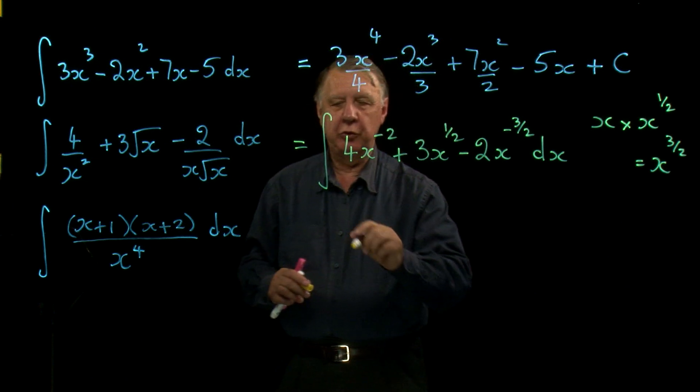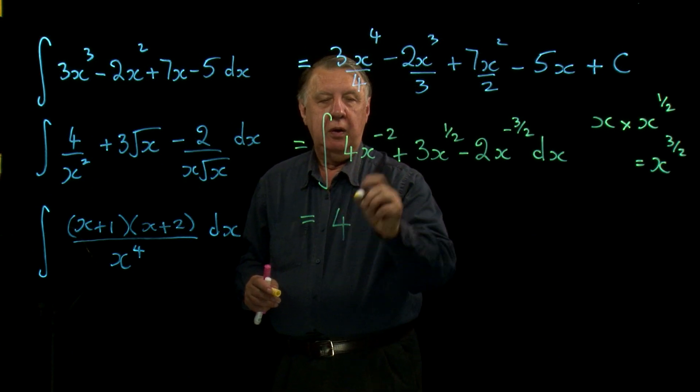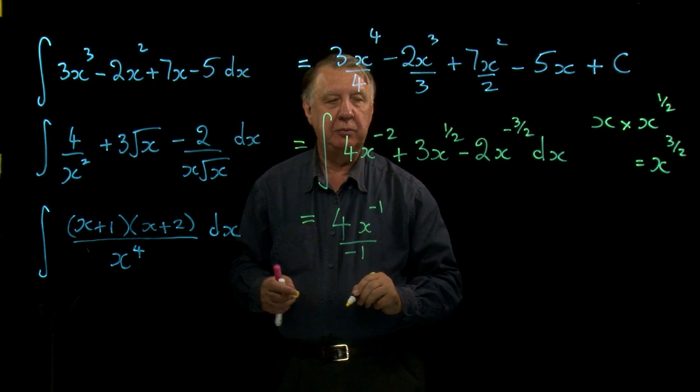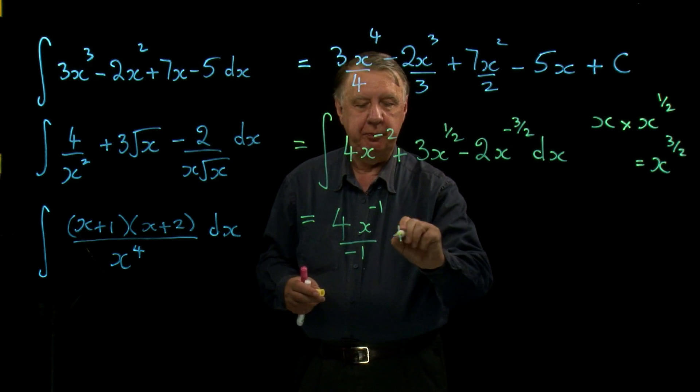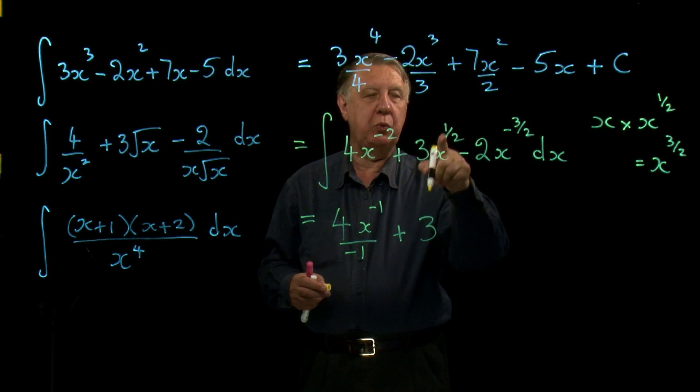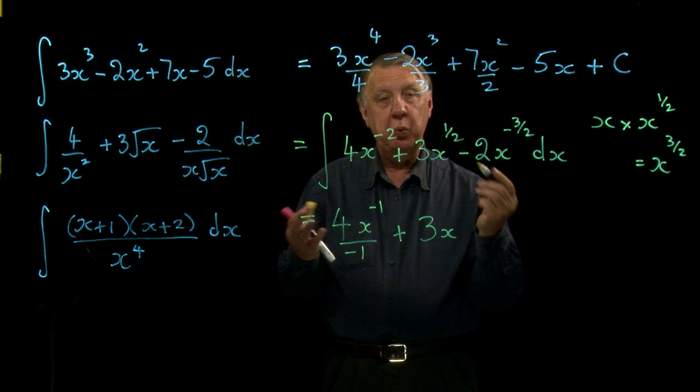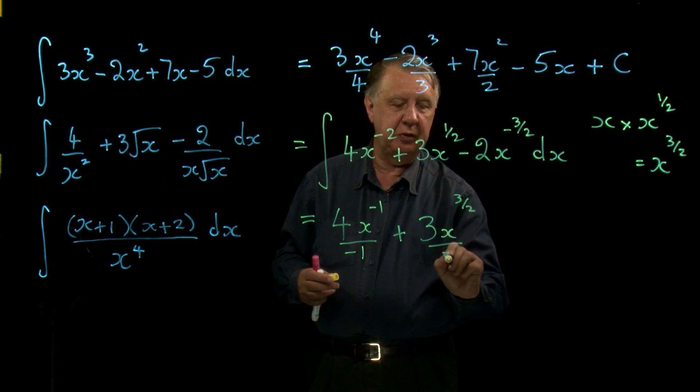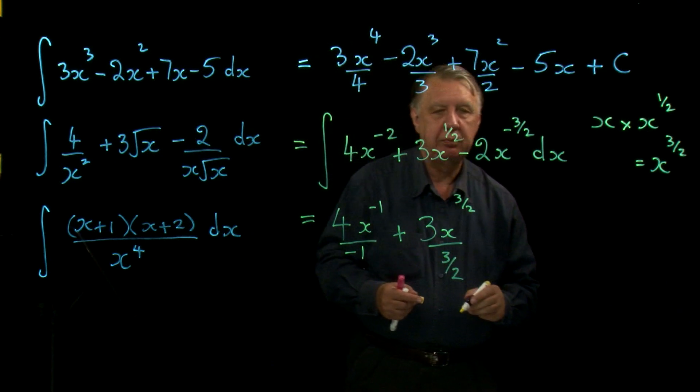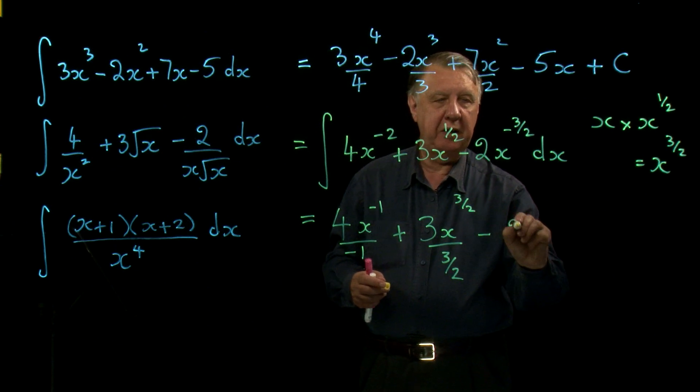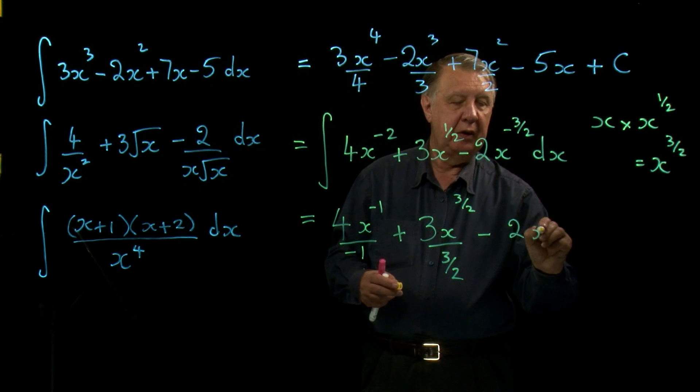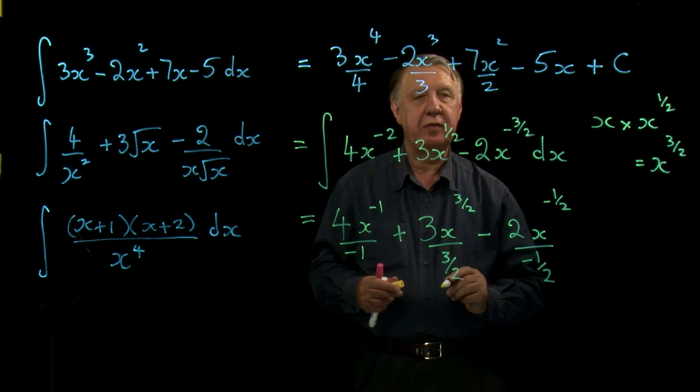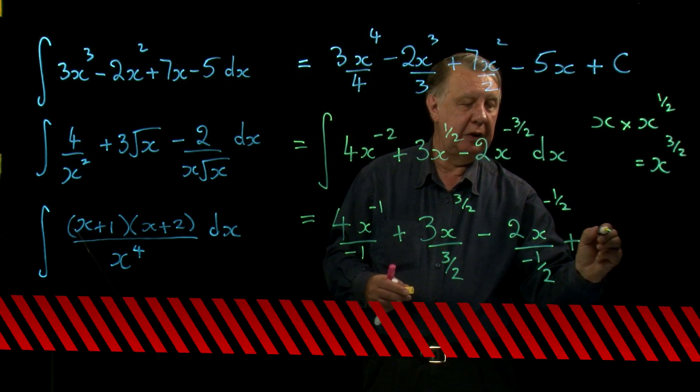X to the minus 2. Add 1 to the power is minus 1. Divide by the new power. Plus x to the half. Add 1 to the power. Now that's 1 and a half. But we don't like mixed fractions. So it's 3 over 2 divided by 3 over 2. Minus twice. Add 1 to negative 1 and a half is negative 1 and a half. So we're dividing here by negative 1 and a half. And finally, plus c.